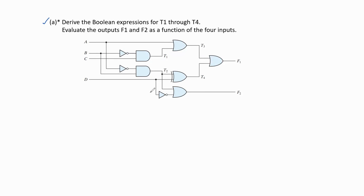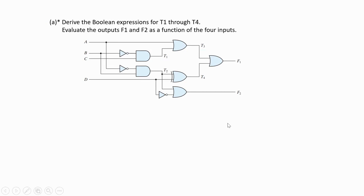In this combinational circuit diagram, the input variables are a, b, c, d and the output variables are f1 and f2. Before finding the values of f1 and f2, we should find the values of t1, t2, t3, and t4. Now we should write the equations for t1 to t4.